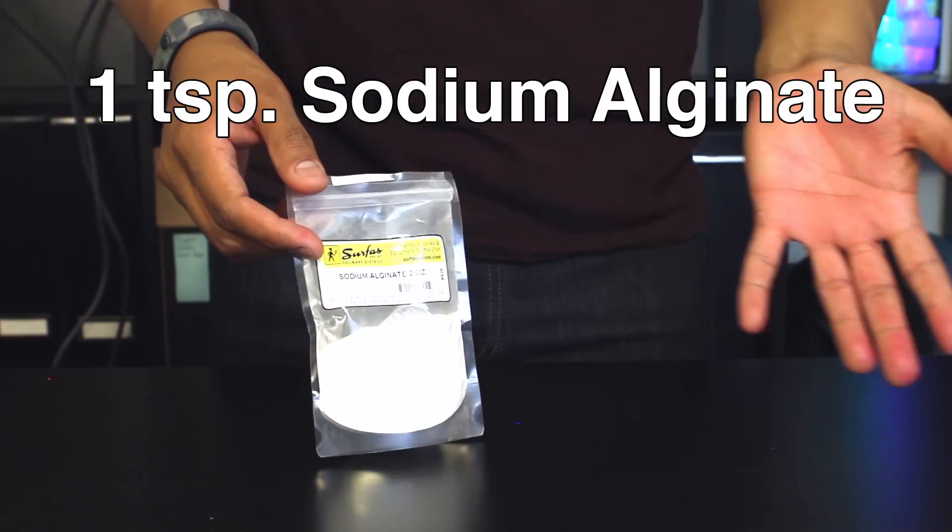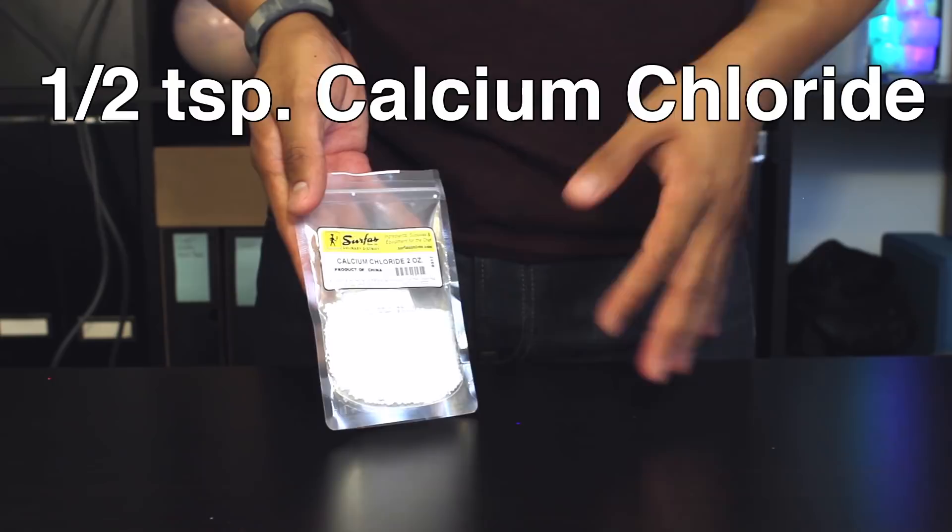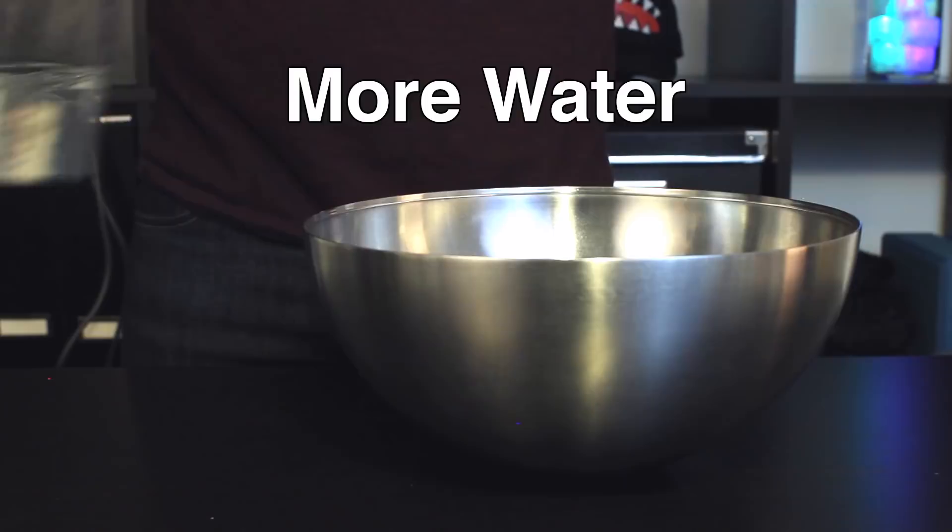Half a teaspoon of calcium chloride. Again, you want to get food grade quality. I got this also at Surfas and you can also find this online. And enough water to fill up one of your large bowls.